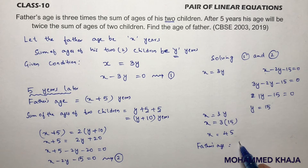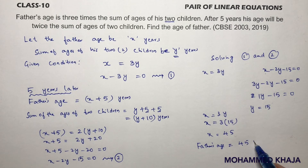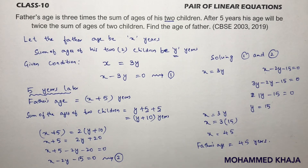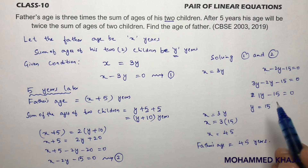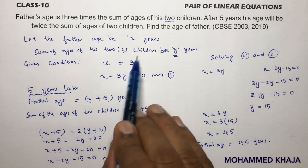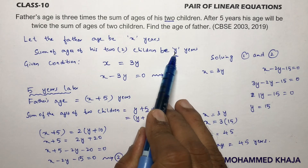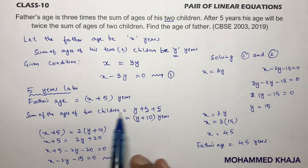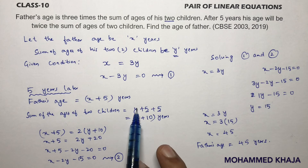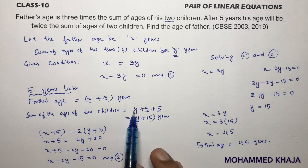Father's age is 45 years. The key point in this problem is that y represents two children, so after five years we must add two times five — ten — to y, because there are two persons included in y.